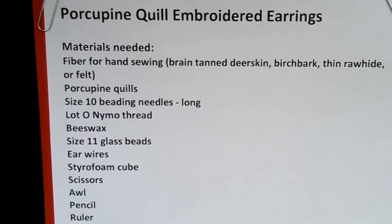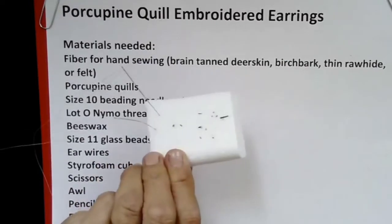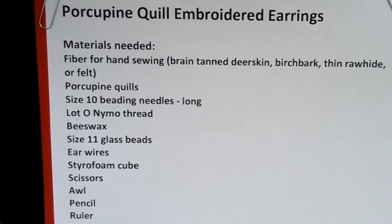For our porcupine quill embroidered earring project we'll need the following materials: some sort of fiber for the hand sewing - in my case brain tan deer skin as well as birch bark, but you can also use thin rawhide or parfleche, or even high grade felt that's nice and thin. You need porcupine quills, size 10 beading needles (the long ones), Lot O Nymo thread, beeswax, size 11 glass beads, ear wires (I prefer sterling silver), a styrofoam cube, scissors, awl, pencil, ruler, and a small water container.